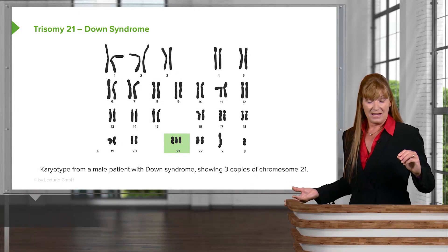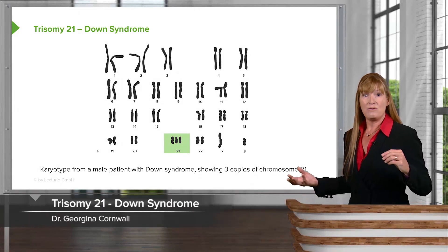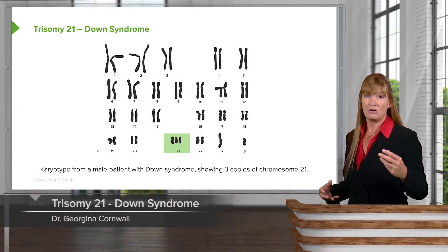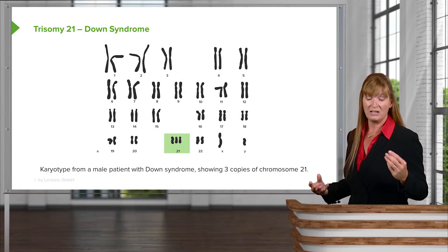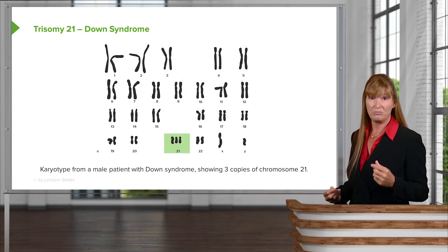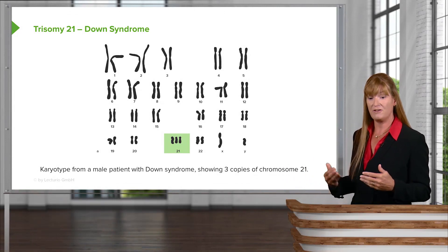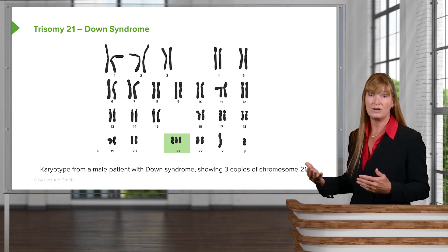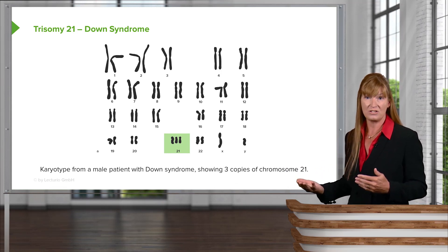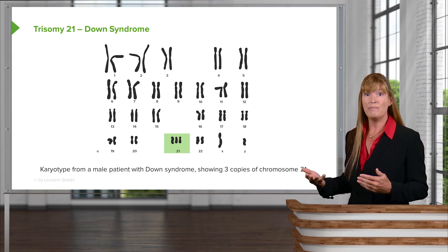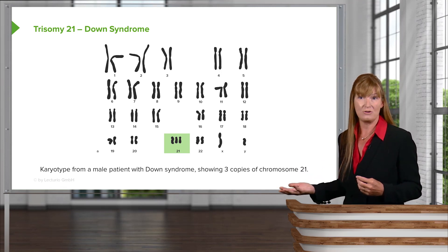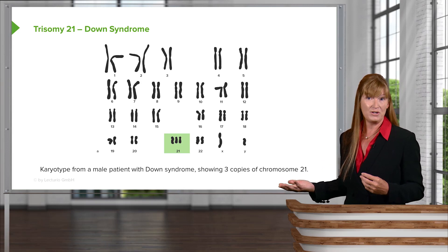Only three chromosomal polyploidies actually persist until birth. The first we'll consider is Down syndrome. There's also Edwards syndrome, which is trisomy of 18, and Patau syndrome, which is trisomy of chromosome 13.